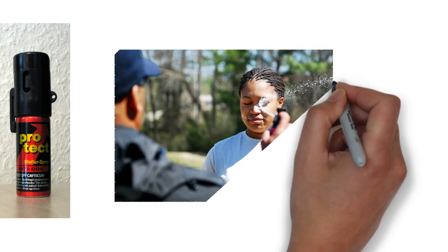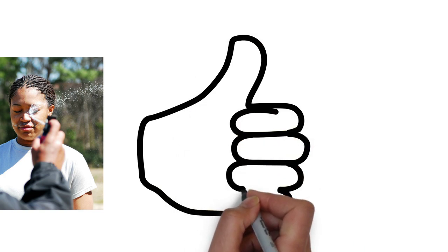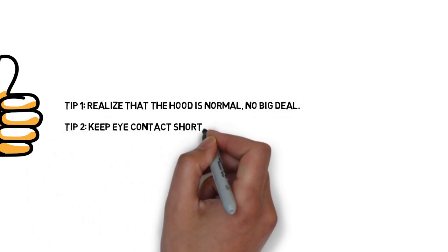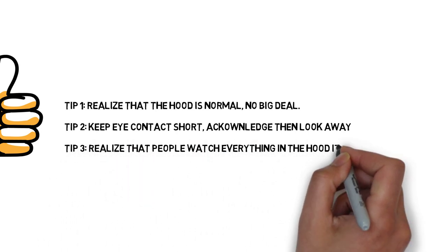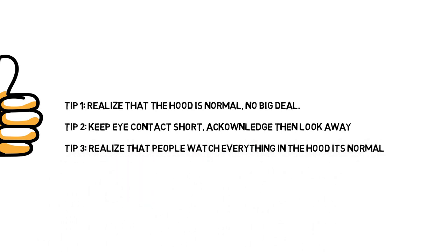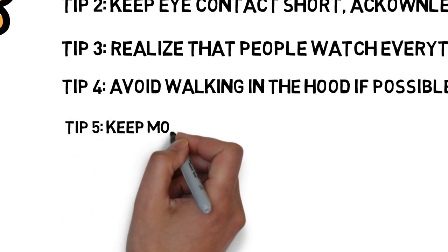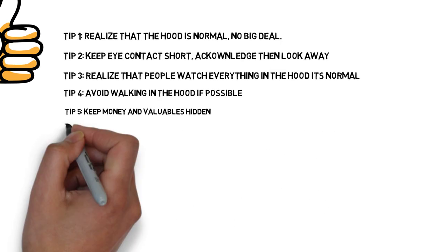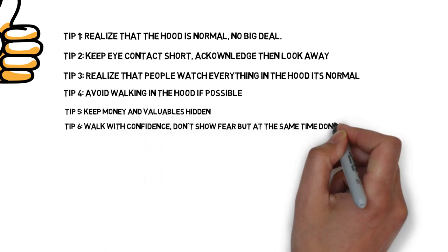And that was it guys, some tips on how to act in the hood. So we'll go over them again quick. Tip one, realize that it's a normal area, no big deal. Tip two, keep eye contact quick, acknowledge someone, look away. Tip three, realize that people watch everyone and everything, that's normal. Tip four, avoid walking if possible, car or Uber is better. Tip five, keep the money and valuables in a different spot if you can, hidden pocket, socks, underwear. And tip six, walk with confidence but don't show fear and at the same time don't act cocky.